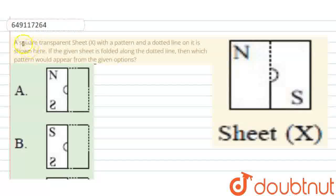Welcome to Doubtnut. Our question is, ask us a transparent sheet X with a pattern and a dotted line on it. It is shown here. If the given sheet is folded along the dotted line, then which pattern will appear from the given option?